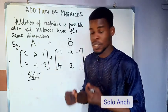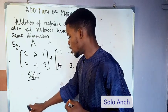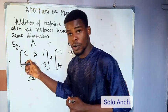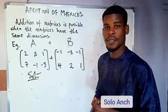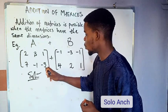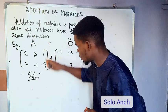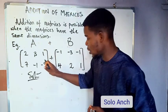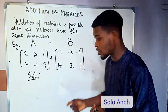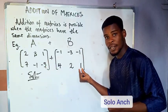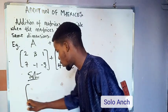By corresponding entries, I mean: the entry in row one, column one of the first matrix should be added to the entry in row one, column one of the second matrix. Similarly, the entry in row two, column three of the first matrix — that element, for example negative three — should be added to the entry in row two, column three of the second matrix.